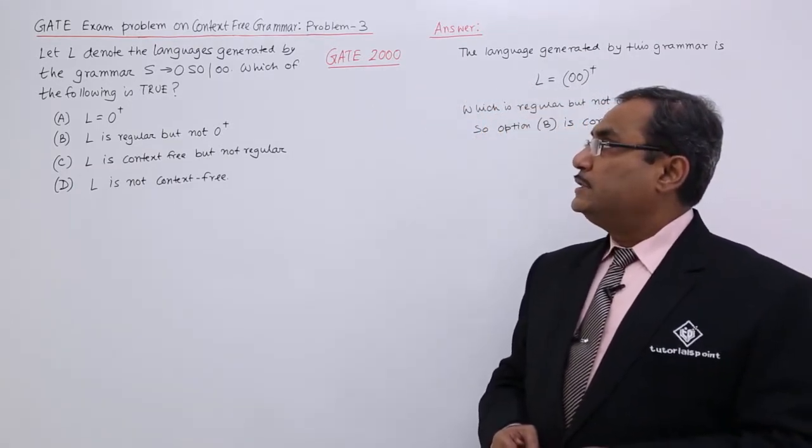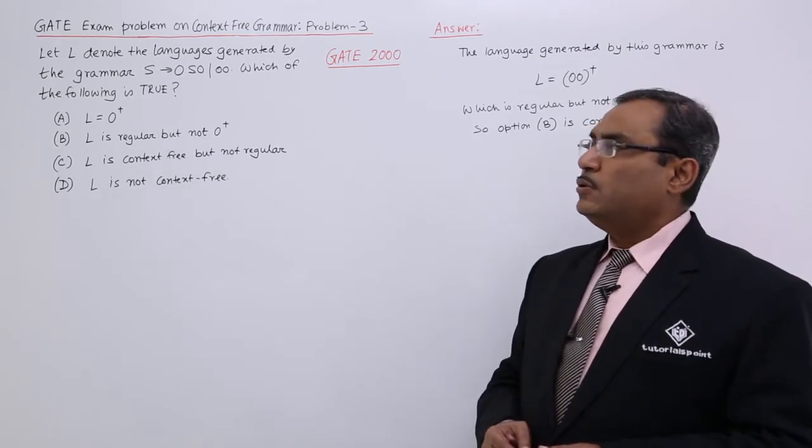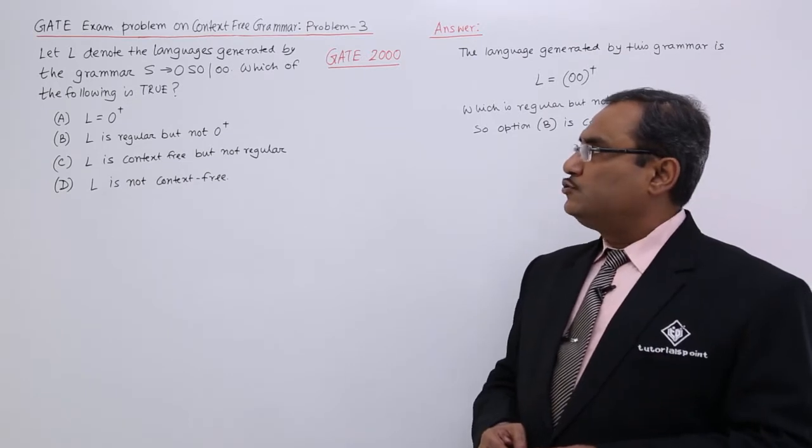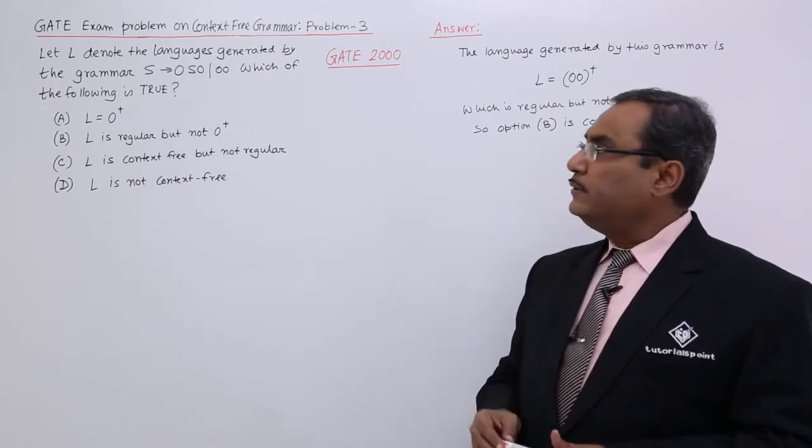Let L denote the languages generated by the grammar S produces 0S0 or 00. Which of the following is true? Now, this is a very simple question.